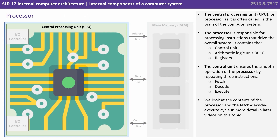The central processing unit, CPU or processor as it's often called, is the brain of the computer system. The processor is responsible for processing instructions that drive the overall system. It contains the control unit, the arithmetic logic unit (the ALU) and registers. The control unit ensures the smooth operation of the processor by repeating three instructions: fetch, decode and execute. We look at the fetch-decode-execute cycle in more detail in later videos on this topic.